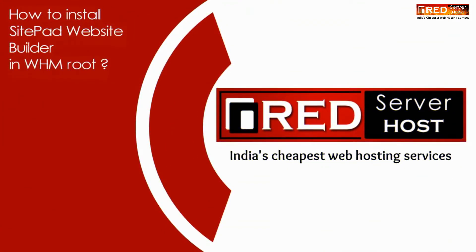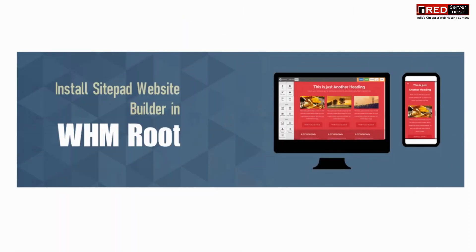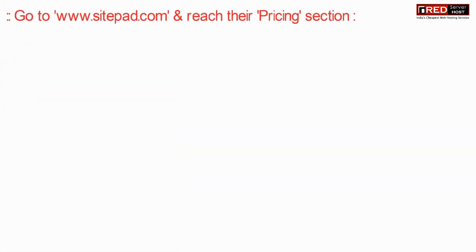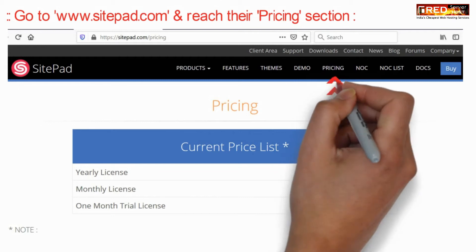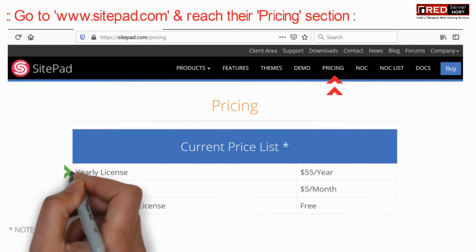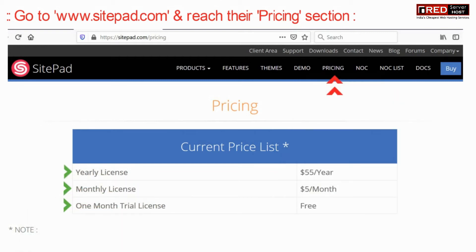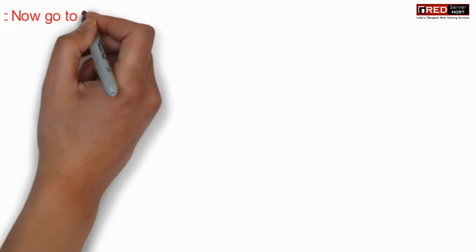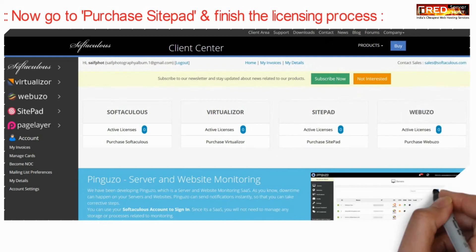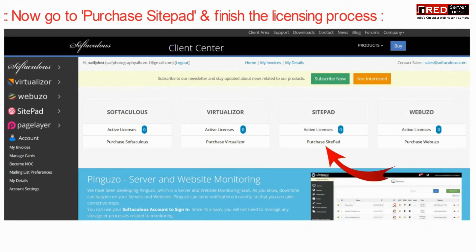Today in this video we will learn about how to install Sitepad website builder in WHM. First of all, go to sitepad.com and then reach their pricing section. Here you need to purchase a Sitepad license.